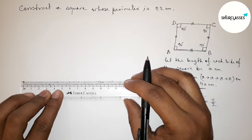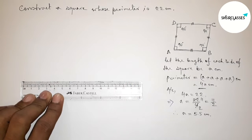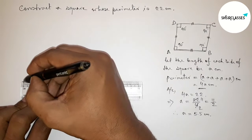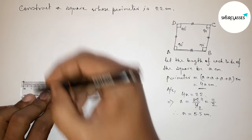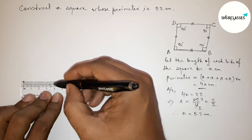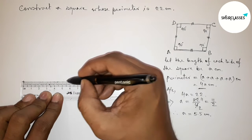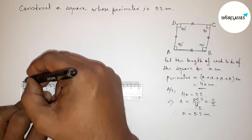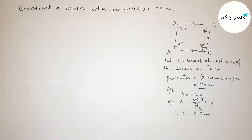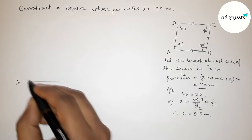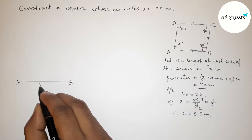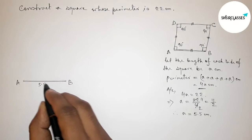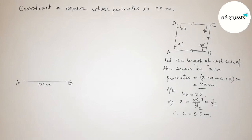Next, we have to construct a square of side 5.5 centimeters. First, draw a line segment of length 5.5 centimeters — measuring 1, 2, 3, 4, 5, and 5.5 centimeters. Label the endpoints A and B, so AB = 5.5 centimeters.